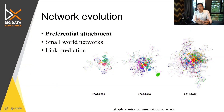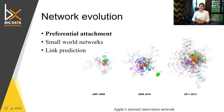The topics in network evolution that are mostly discussed are preferential attachment, which is the first property of the network structure, and the next one is the small world phenomenon, or small world networks.